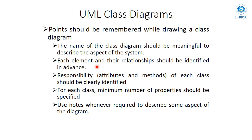Before we start drawing our class diagram, we must define and identify all the elements in the system and the different kinds of relations that may occur between them. The responsibilities — meaning the attributes (variables) as well as the functions or methods of each class — must be clearly identified. When we represent a class in a class diagram, the number of properties shown must be minimum. Instead of showing each and every member, include only the most important attributes and methods, otherwise the diagram becomes too bulky and difficult to understand.